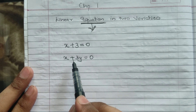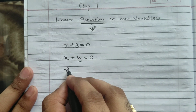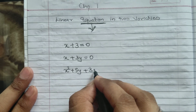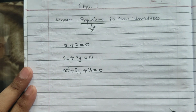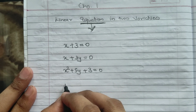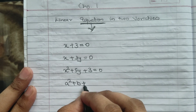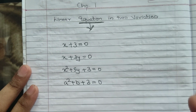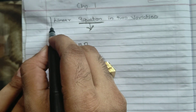Minimum one variable means x se zyada ho sakta hai, but ek to hona hi chahiye. 'x² + 5y + 3 = 0' — is it an equation? Yes. 'a² + b + 3 = 0' — is it an equation? Yes. Now, what do you mean by 'linear'?